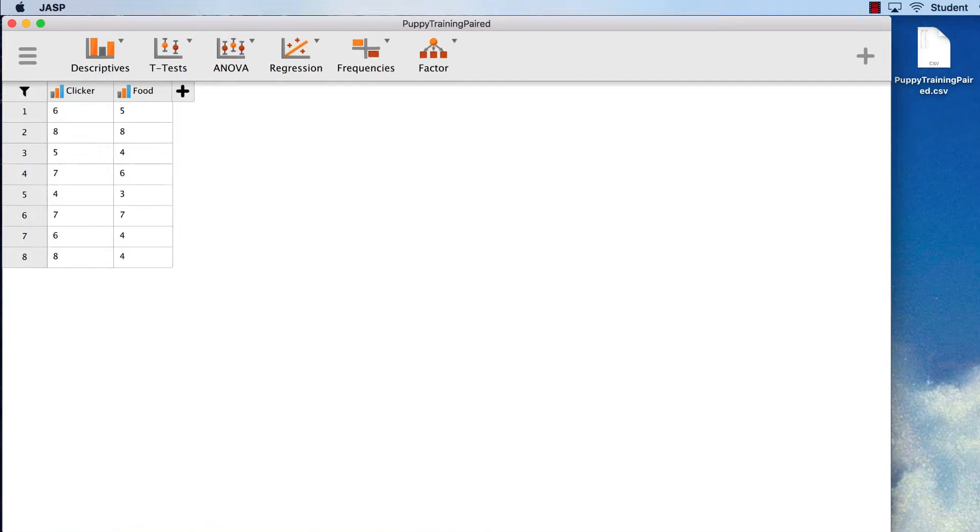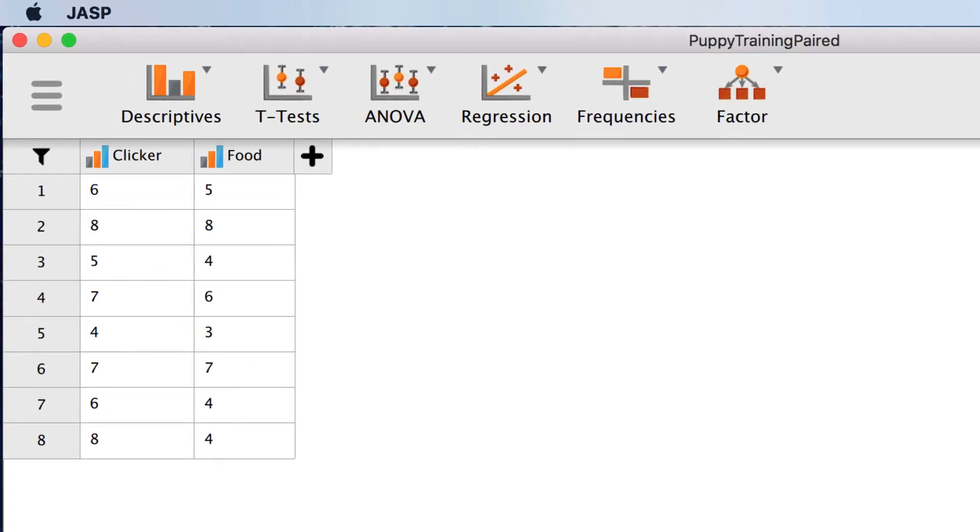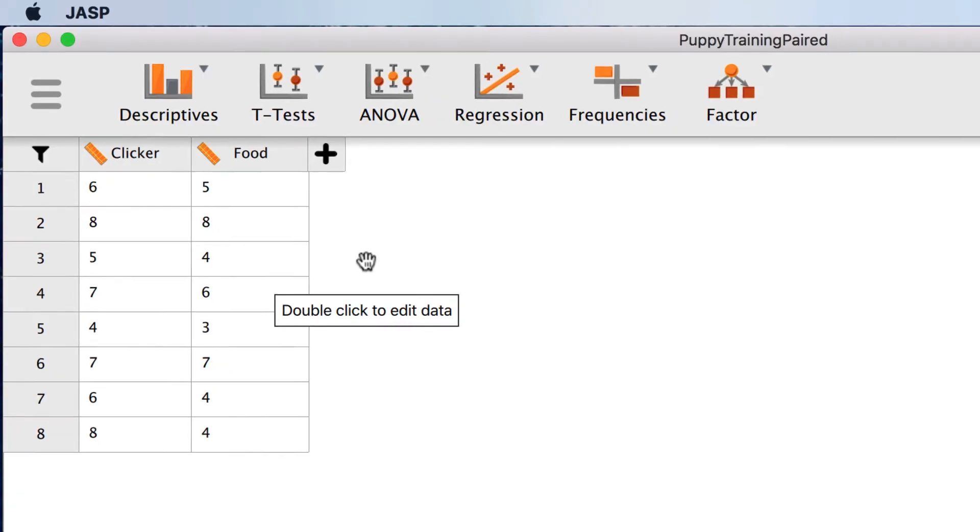Let's begin by looking at our data. The first of the two variables that we will use is clicker, which is the number of tasks correct out of 10 for the puppies trained with clickers. The second variable is food, which is the number of tasks correct out of 10 for the puppies trained with food rewards. Both of these are scale variables, but they were imported as ordinal. On the left edge of each box we can click here to change column type and set it to scale. Do not click on the variable name or you will be changing variable labels. Click on the left edge of the box. And now we are ready to do the analysis.